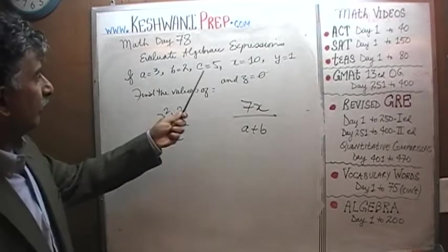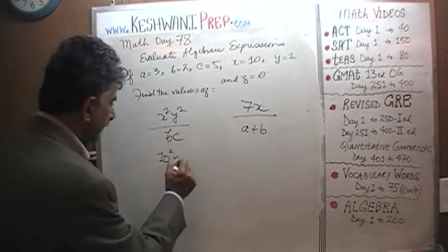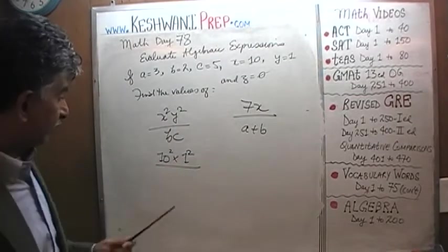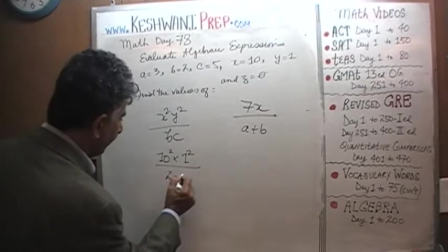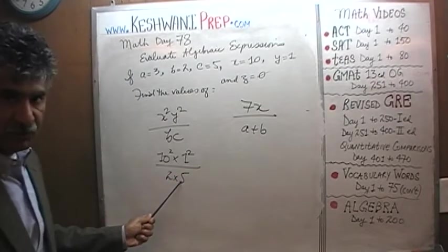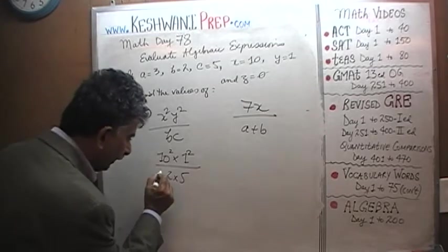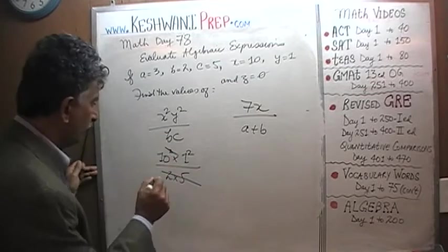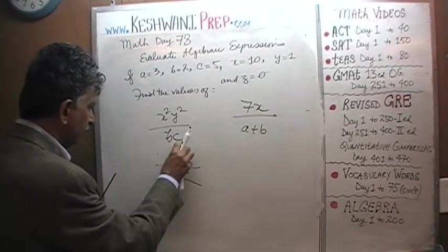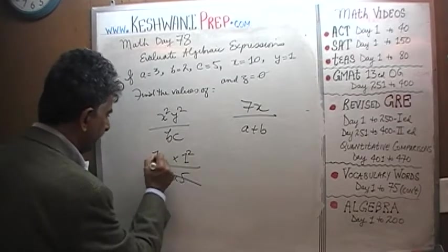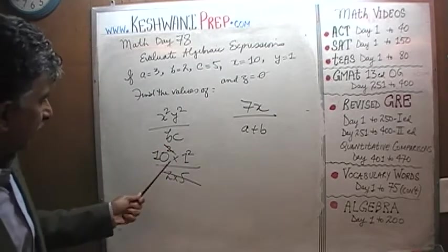X squared is going to be 10 squared times Y squared which is 1 squared which really doesn't play any role. It's just going to be 100 times 1. B times C, B is 2 and C is 5, so we end up with 2 times 5 which is 10 and this is 10 squared. Let's divide top and bottom by 10 twice. When we do that this power of 2 goes away and it just becomes 10. 10 times 1 is 10.